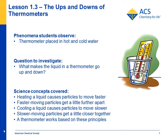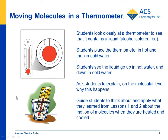Now they realize that a thermometer works for exactly those reasons. In the activity, kids look very closely at the thermometer to see that it contains a liquid, put it in hot water and cold water, and see what happens. They already know that heating a liquid increases molecular motion and particles get further apart, and cooling decreases molecular motion. So they begin to make the connection that that's exactly what is happening in the red liquid in the thermometer.